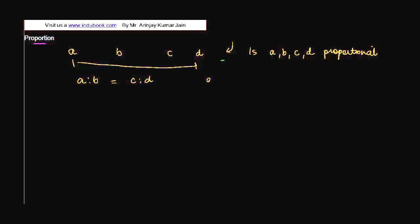We write this basically as A is to B is proportional to C is to D.